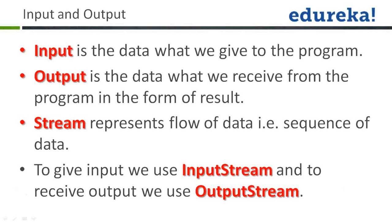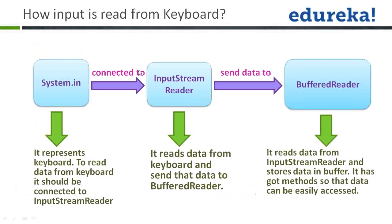In Java programs, a stream represents the flow of data — that is, a sequence of data. The entire sequence of data is considered to be a stream. To give input we use an input stream, and to give output we use the output stream. To read input from the keyboard, there is System.in, which represents the keyboard, and it should be connected to InputStreamReader.